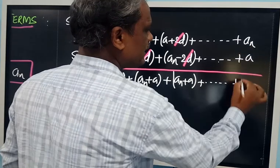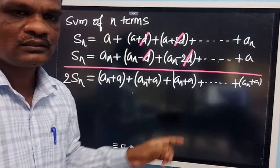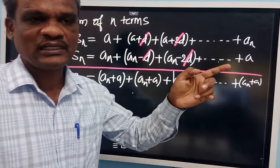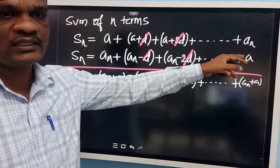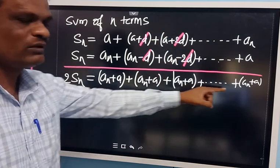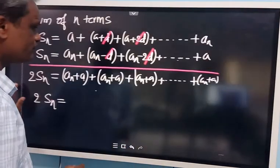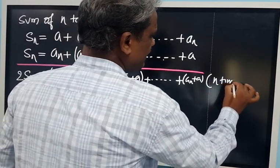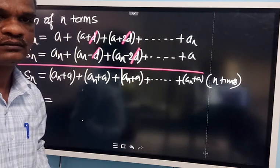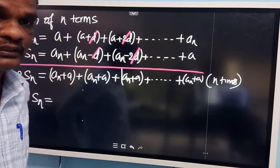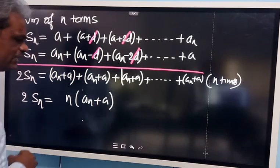So AN plus A appears N times in total — because we have N terms. Just as with 100 natural numbers there were 100 101's, here we have N terms so AN plus A appears N times. The easiest way to add N times is multiplication: N into (AN plus A) is the sum of the two combined sequences.